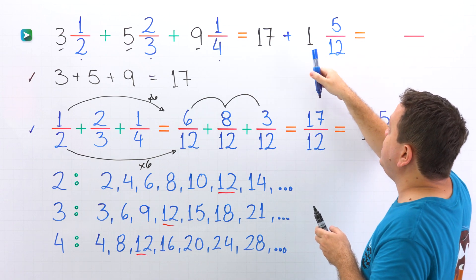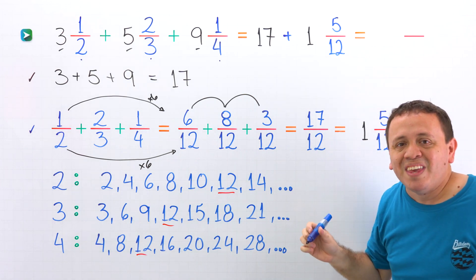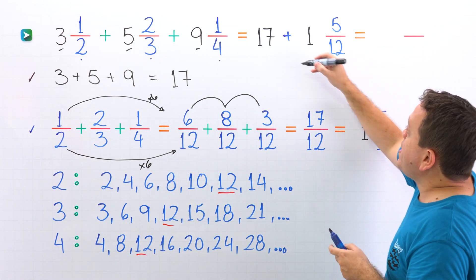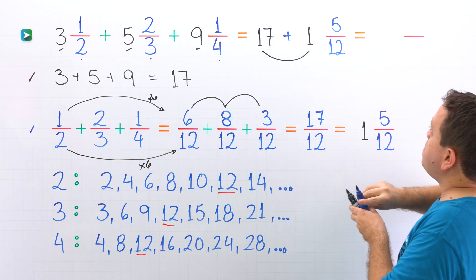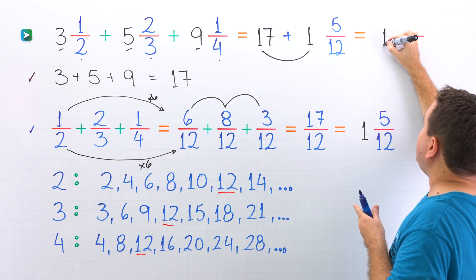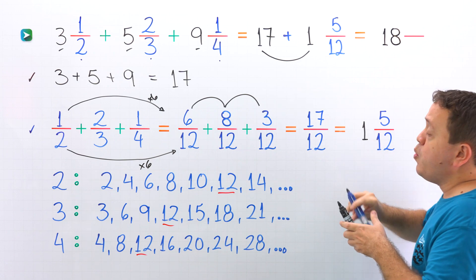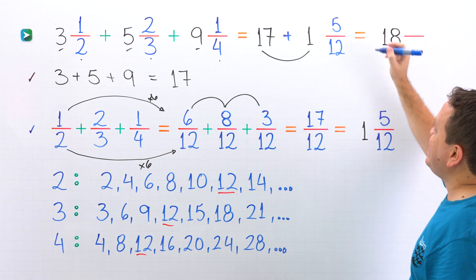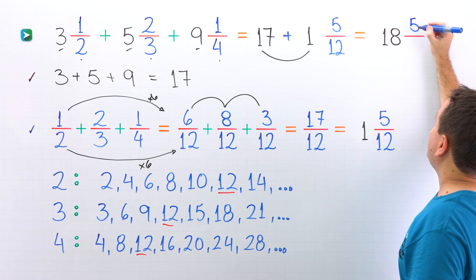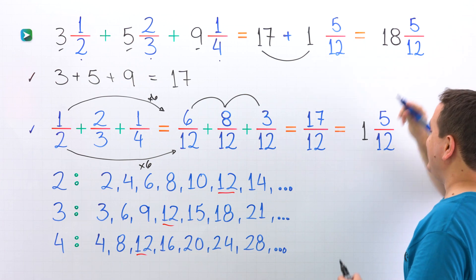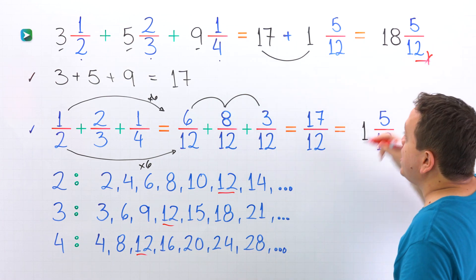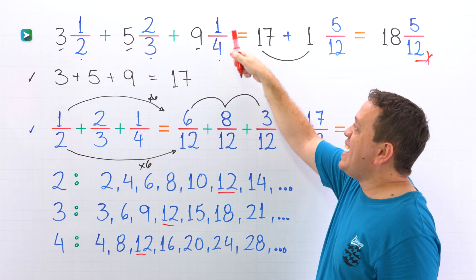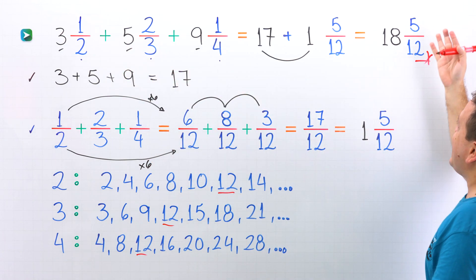Here we have the sum of a whole number and a mixed number. We just need to follow the same steps. We start by adding the whole numbers: seventeen plus one gives us eighteen. Then we add the fractions — however, we only have one fraction here, and that is five twelfths. This is the final answer: three and one half plus five and two thirds plus nine and one fourth gives us eighteen and five twelfths.